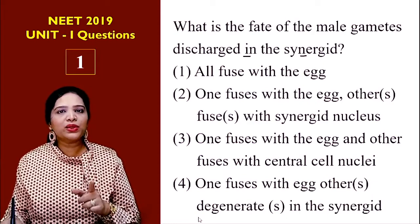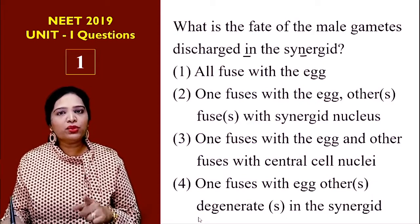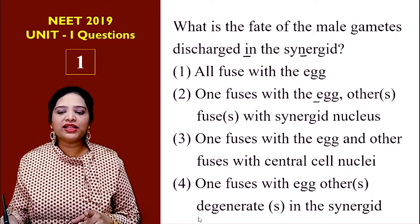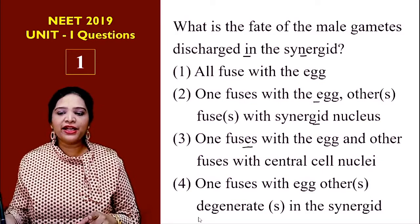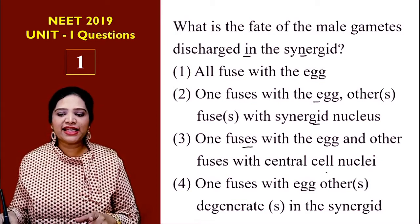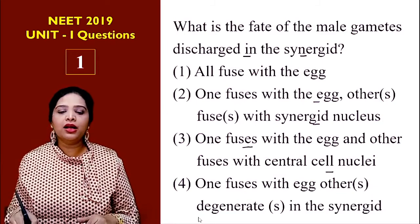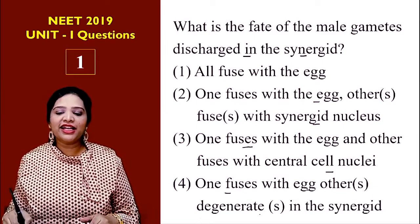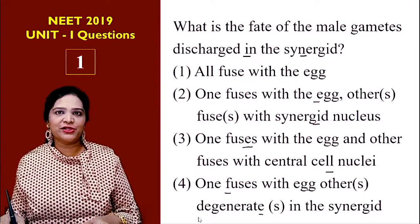The options are: all fuse with the egg; one fuses with the egg and the other fuses with the synergid nucleus; one fuses with the egg and the other fuses with the central cell nuclei; or one fuses with the egg and the others degenerate in the synergids.